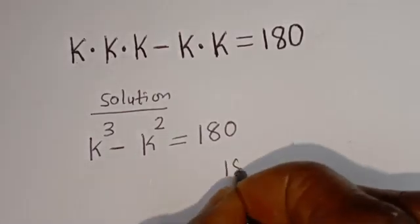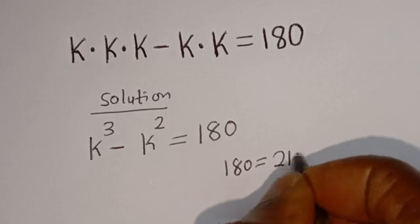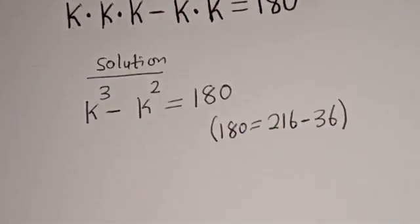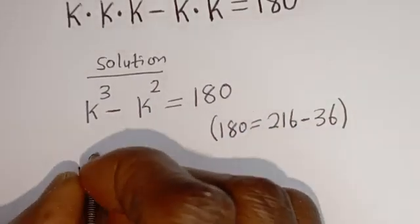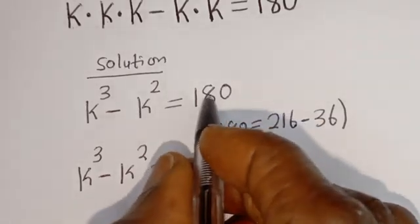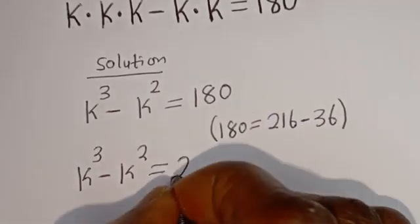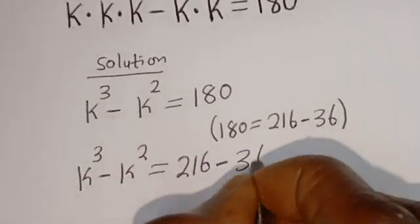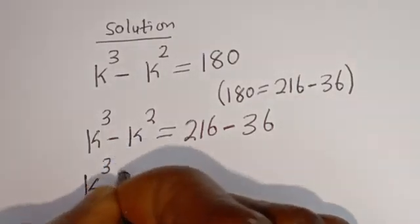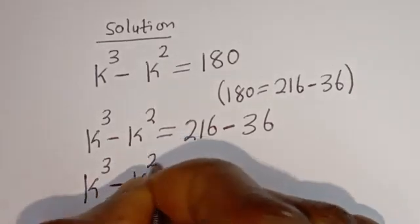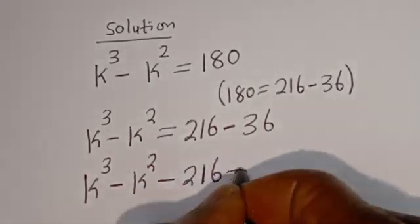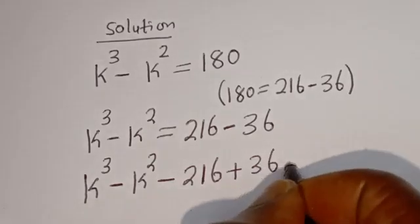Now 180 is equal to 216 minus 36. So k to the power of 3 minus k squared is equal to 216 minus 36. Let's replace 180 with 216 minus 36, then bring everything to one side: k to the power of 3 minus k squared minus 216 plus 36 is equal to 0.